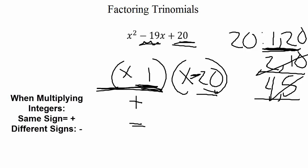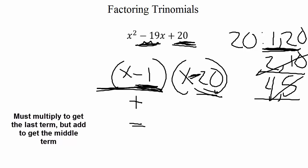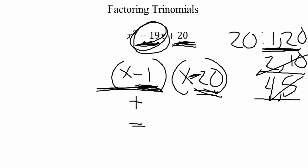So would a positive 1 times a negative 20 give us a positive 20? Or would a negative 1 times a negative 20 give us a positive 20? Well, a negative would work, right? A negative 1 times a negative 20 would be a positive 20. Now, the rule did say that these need to multiply to get the last term, but add or subtract to get our middle term. Now, negative 1 times negative 20 is a positive 20. Negative 1 plus negative 20 is a negative 21, not a negative 19.